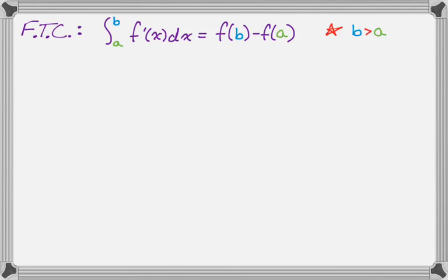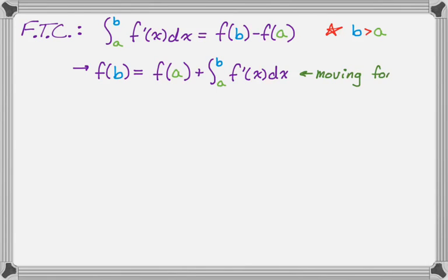And so that means we can rearrange this fundamental theorem. So for example, we can solve for f of b. And so f of b is just going to be f of a, it's kind of like where you're starting, plus your displacement. So plus the integral from a to b of f prime of x dx. So that's if we're moving forward, right? So we want to find a value that is greater than the given value, or at a time that's greater than the given time.